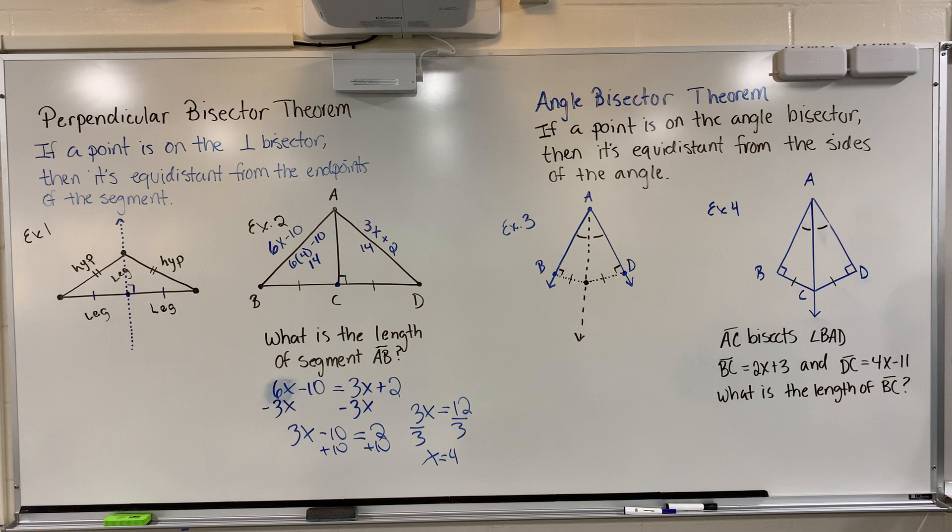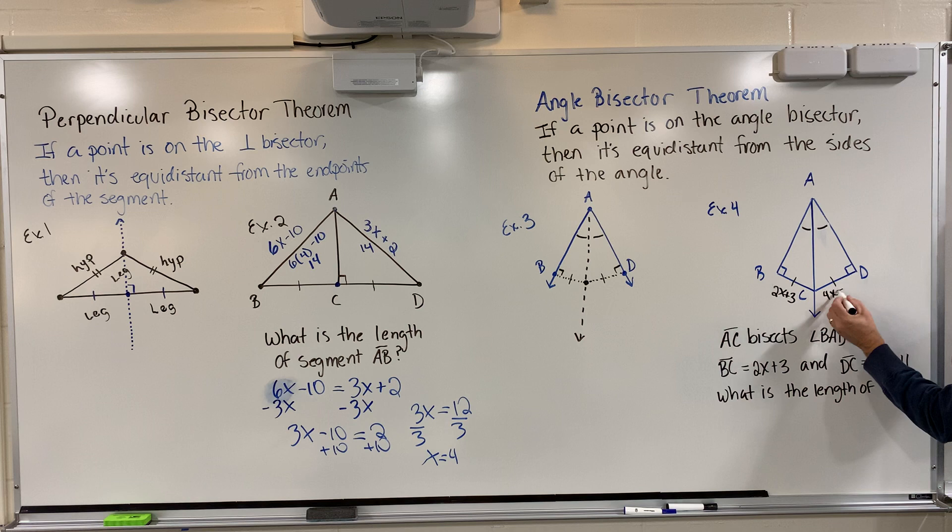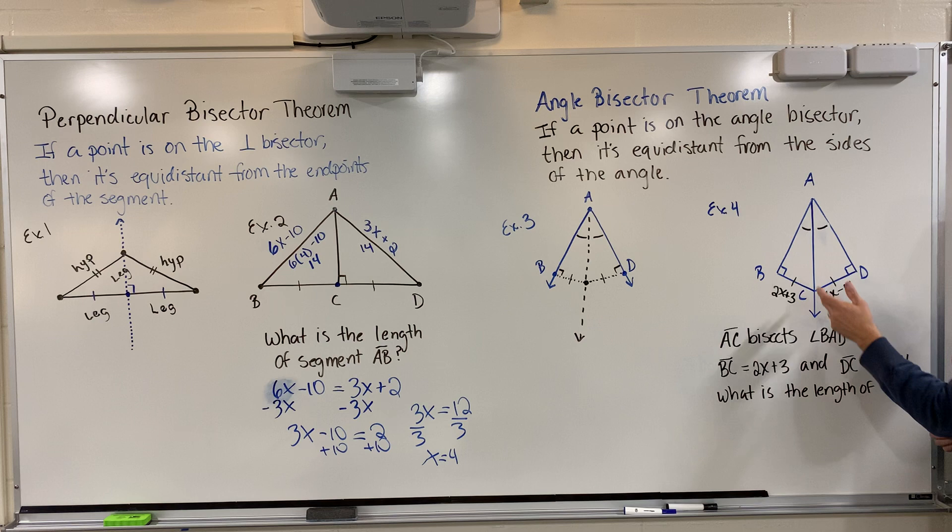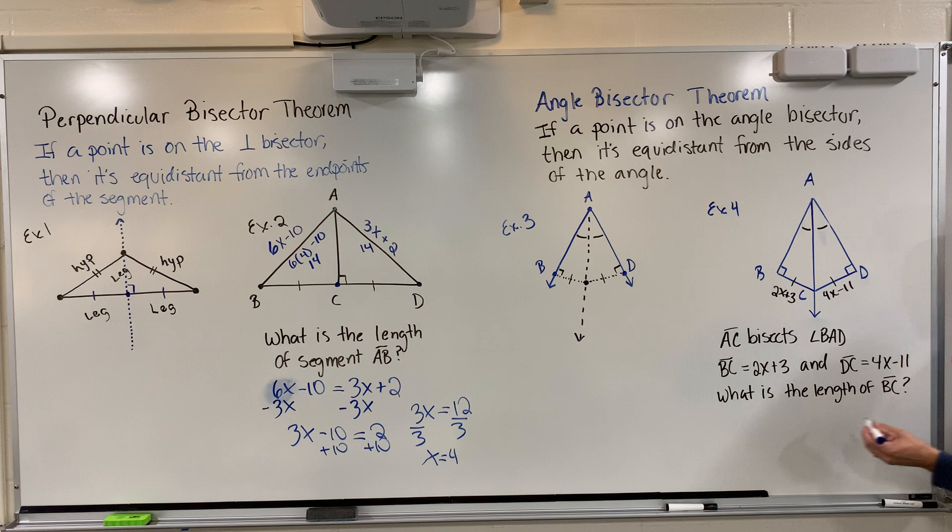I now look at the problem. It says BC is equal to 2x plus 3. So if I want to write that information in, I can say 2x plus 3. And DC is equal to 4x minus 11. Once I realize that these are an angle bisector, I know that these two things are congruent, these two angles are, and so are these two segments, which puts me right in the spot where I need to be for solving the problem.